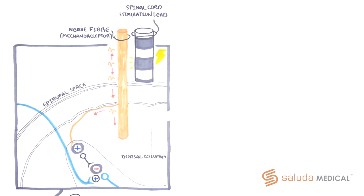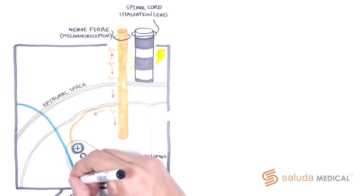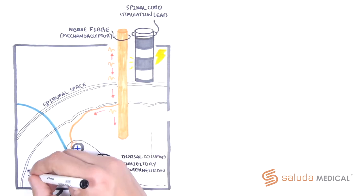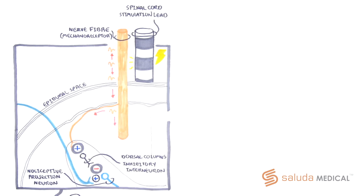Activation of these fibers causes the subsequent activation of inhibitory interneurons in the spinal dorsal horn, which in turn suppress the activation of nociceptive projection neurons and the transmission of pain signals to the brain. ECAP controlled closed loop spinal cord stimulation is designed to capitalize on this mechanism of action.